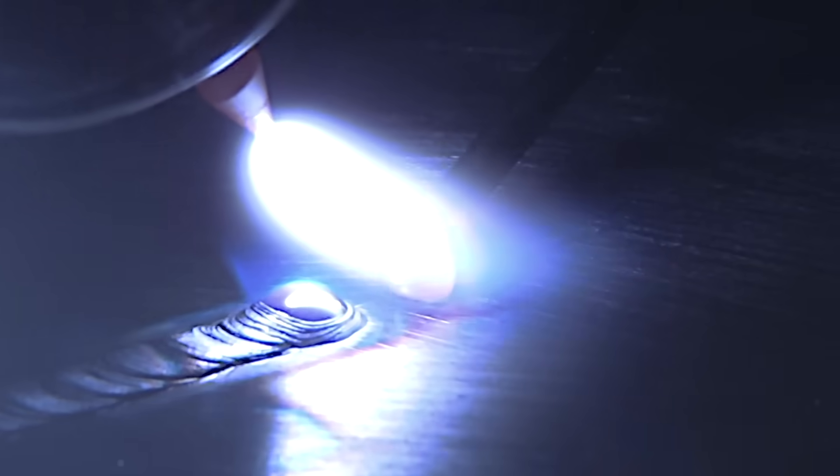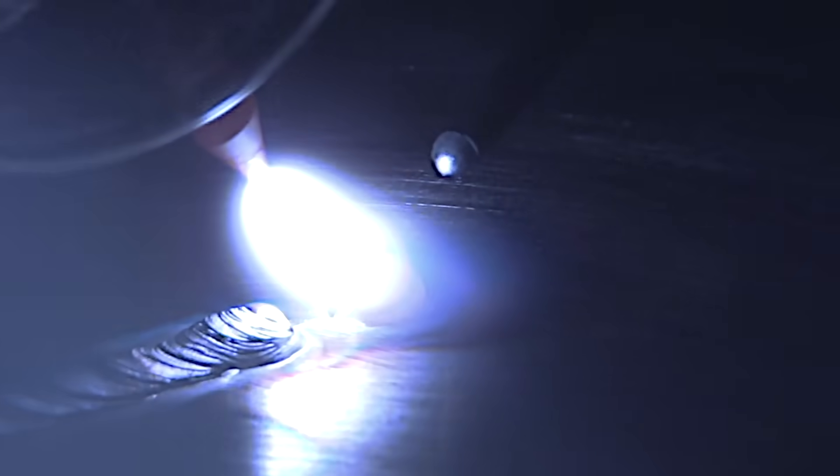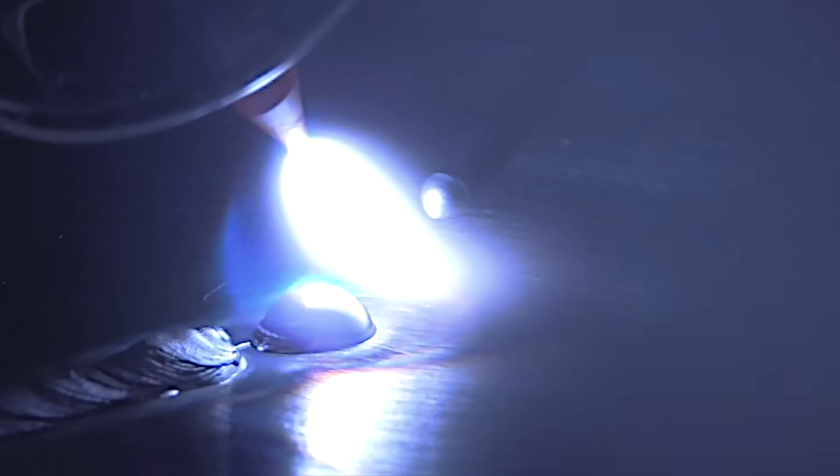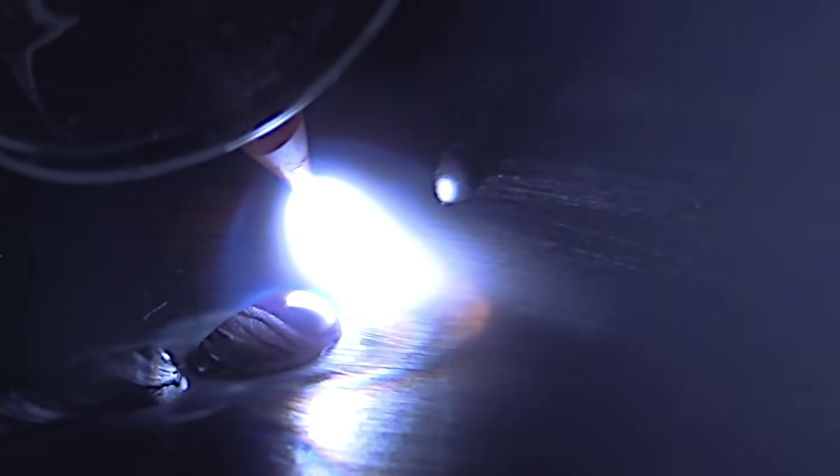And look what happens—the puddle won't even move along with me, and now the filler rod just wants to blob and lay on the top. I tighten the arc length back up and things get better again.